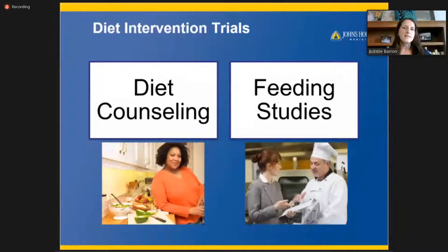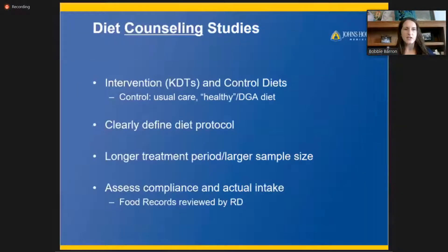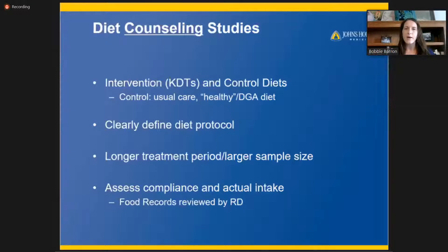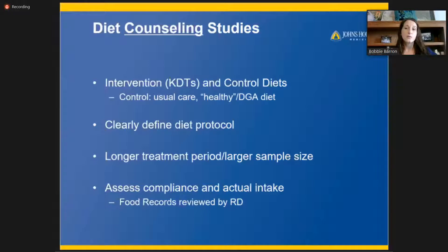Diet counseling studies and diet feeding studies are two types of diet intervention trials. Intervention diets with or without controlled diets can be used in diet counseling studies. The diet and teaching protocol are very clearly defined. Typically, the patients in the control arm are given the same amount of attention, like visits and follow-up, as in the intervention arm. This type of study has the potential for longer treatment periods and larger sample sizes. Food records may be used as a self-monitoring tool to ensure the patient is following the intended diet.